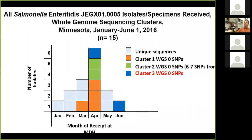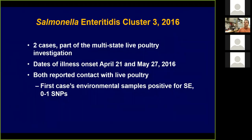Now let's look at cluster three. These are two isolates with zero SNP differences. These were actually part of a multi-state live poultry investigation. Both reported contact with live poultry. In one case they went back to some environmental samples, found a positive for Salmonella enteritidis, found zero to one SNPs. So both linked to live poultry, probably via whole genome sequencing. These are the sort of small outbreaks you will start to detect with whole genome sequencing.